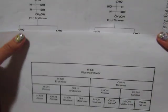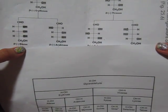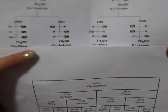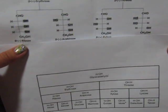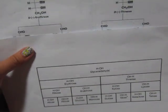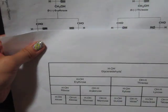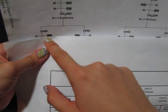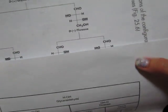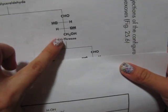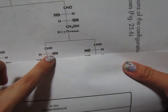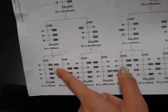Now you elongate one more time — you elongate erythrose and you get ribose and arabinose, with three chiral carbons. The same pattern shows up on the very top carbons: the OH is on the right side, and then the OH is on the left side. And on threose, it's the same thing — as you elongate threose, you get that pattern where the OH here is on the right side, and then the OH here is on the left side.